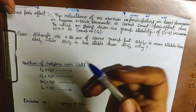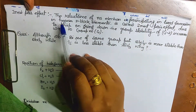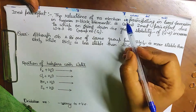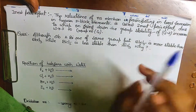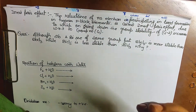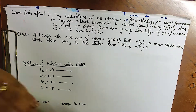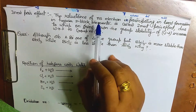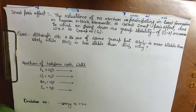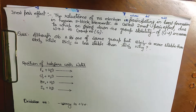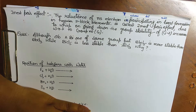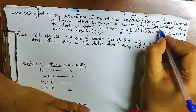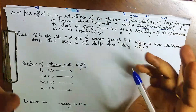The Inert Pair Effect refers to the reluctance of ns² electrons in participating in bond formation in heavier p-block elements. As we go down the group, the ns² electrons — in the configuration ns² np¹⁻⁶ — don't want to participate in bond formation. They are reluctant, and this phenomenon is known as the Inert Pair Effect.